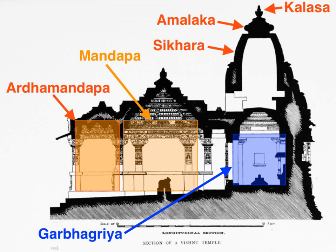Hindu temple architecture, as the main form of Hindu architecture, has many varieties of style, though the basic nature of the Hindu temple remains the same, with the essential feature being an inner sanctum — the Garbhagriha or womb chamber — where the primary murti or image of a deity is housed in a simple bare cell. On the exterior, the Garbhagriha is crowned by a tower-like Shakara, also called the Vimana in the south. The shrine building often includes an ambulatory for parikrama, a mandapa congregation hall, and sometimes an antarala antechamber and porch between the Garbhagriha and mandapa.